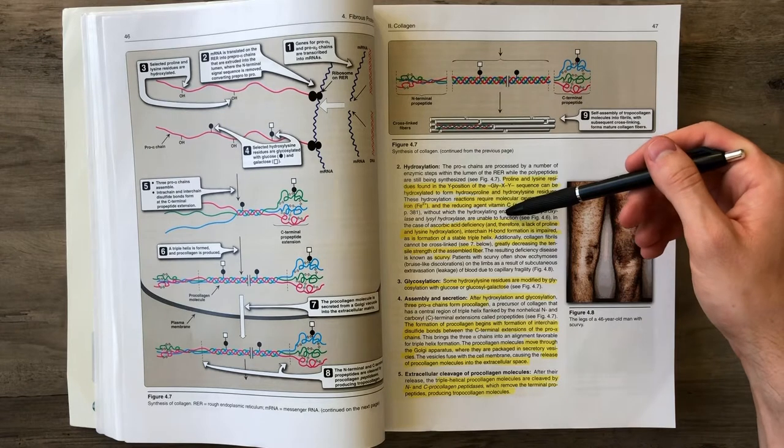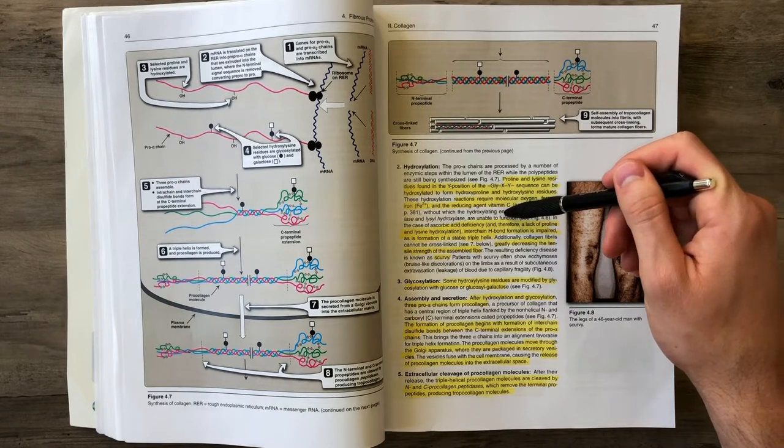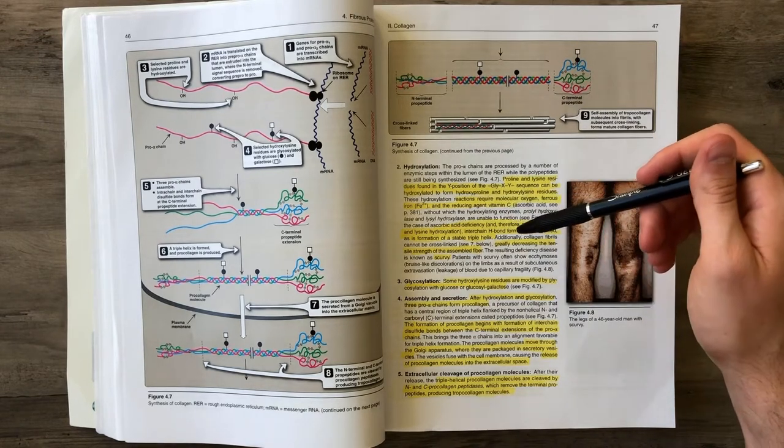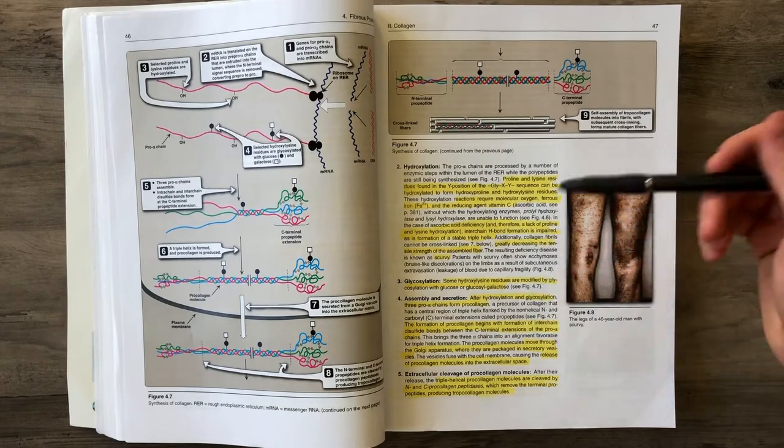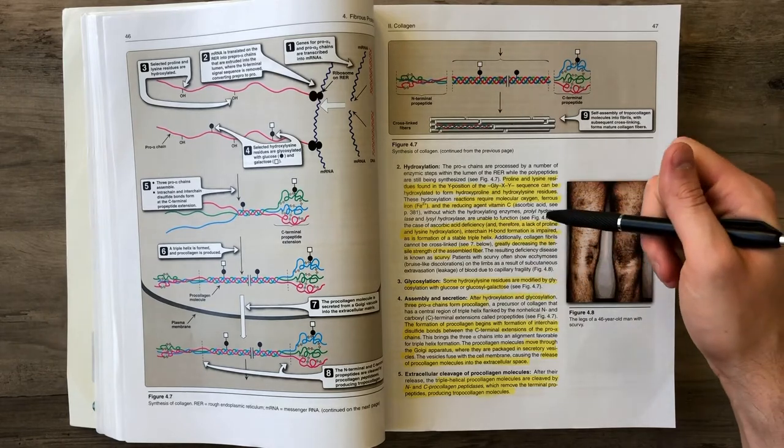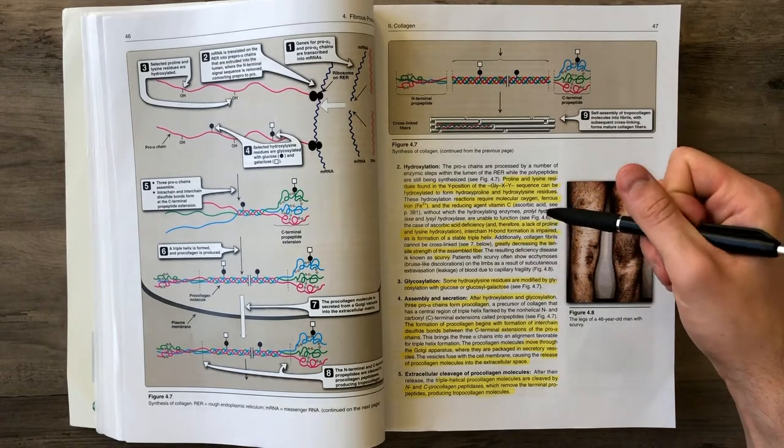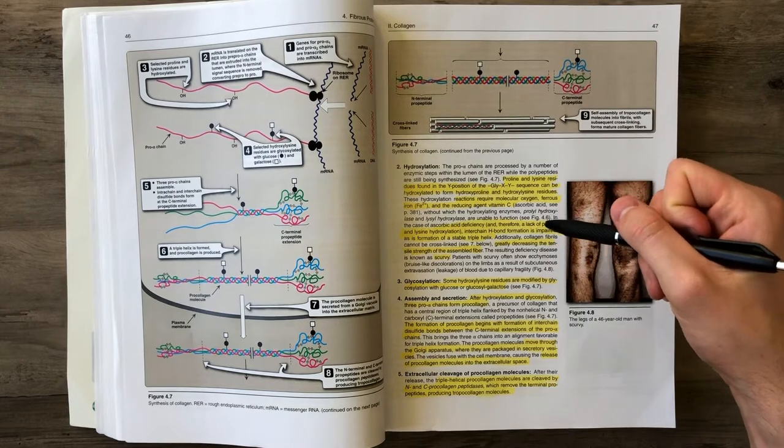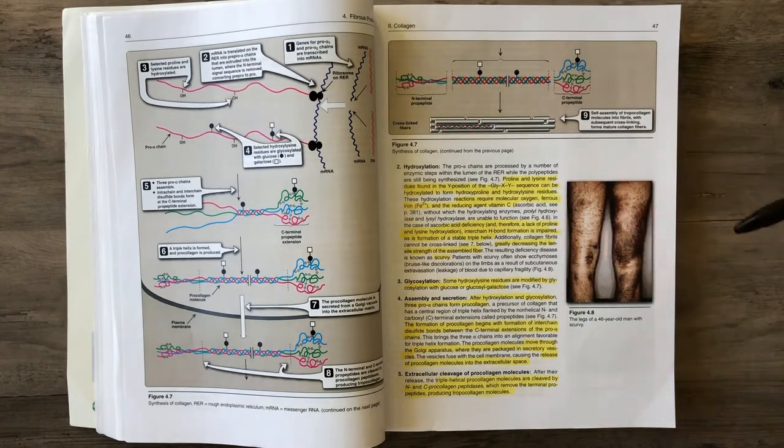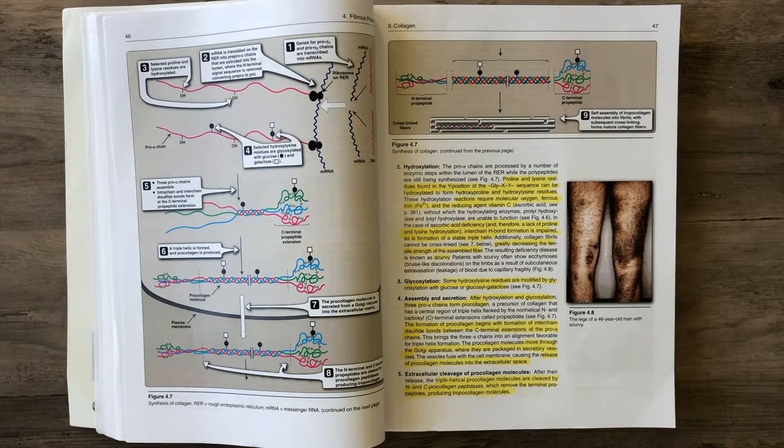Vitamin C is needed for hydroxylation to allow collagen to get formed. Without vitamin C, collagen in our body is very weak. The most obvious clinical sign is a bleeding tendency because collagen in your gums and blood vessels is weak and easily broken down.